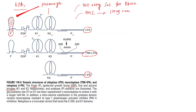Alteplase is fibrin selective but not as selective as tenecteplase and reteplase. It is used in cases of acute MI at a dose of 100 mg over 60 minutes. It has shown benefits in patients less than 75 years of age with anterior MI who presented within six hours of symptom onset.